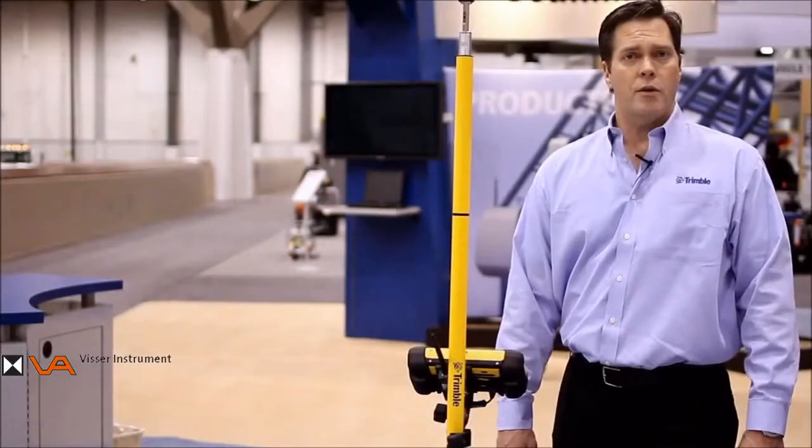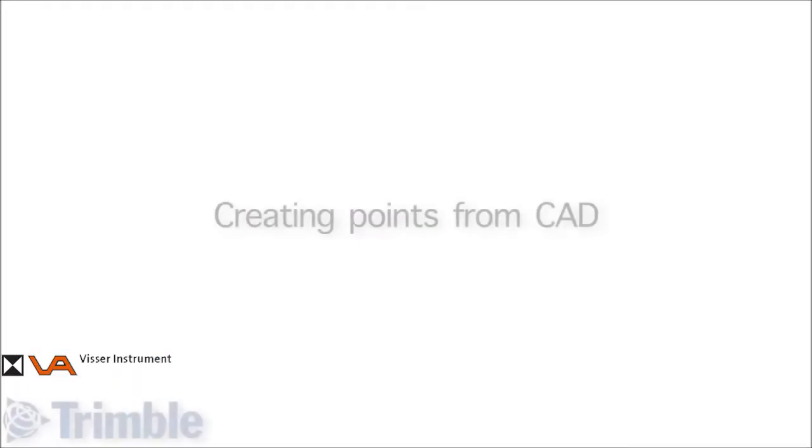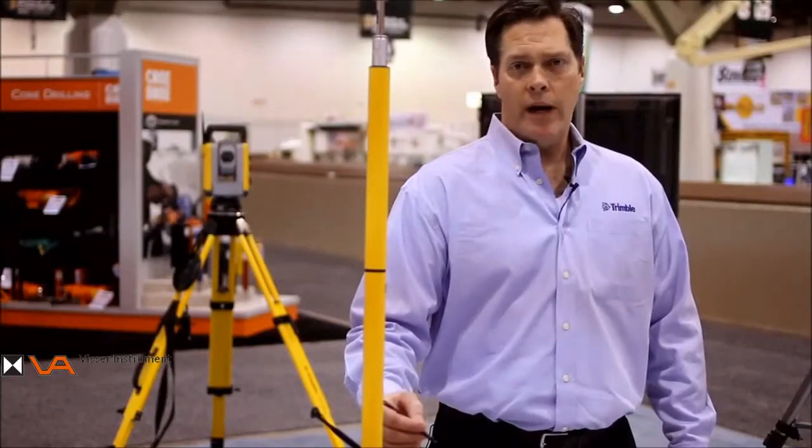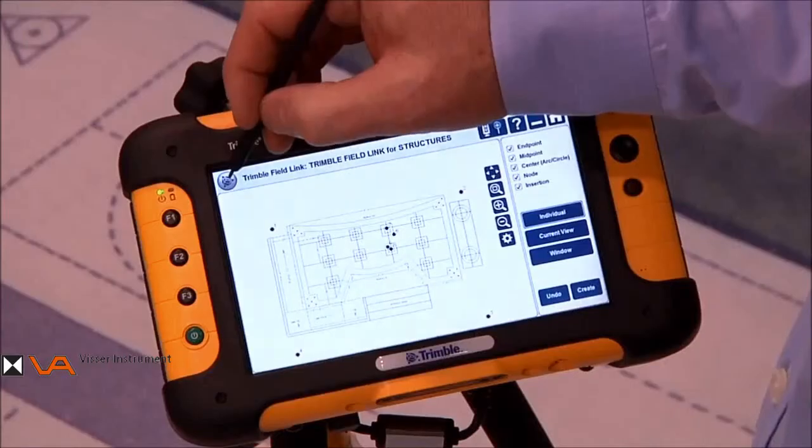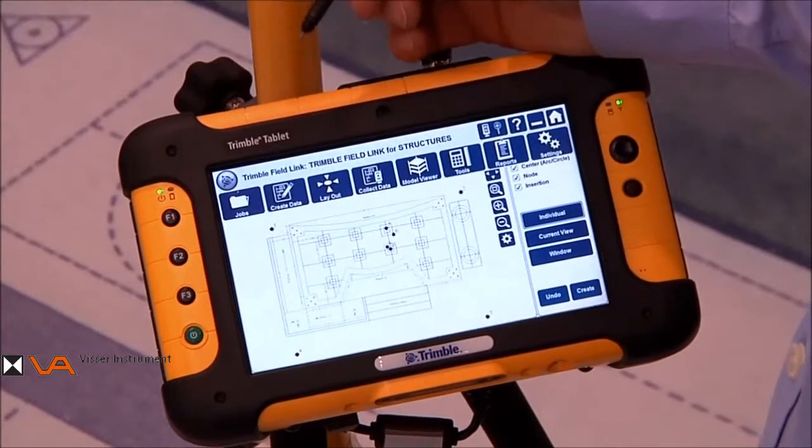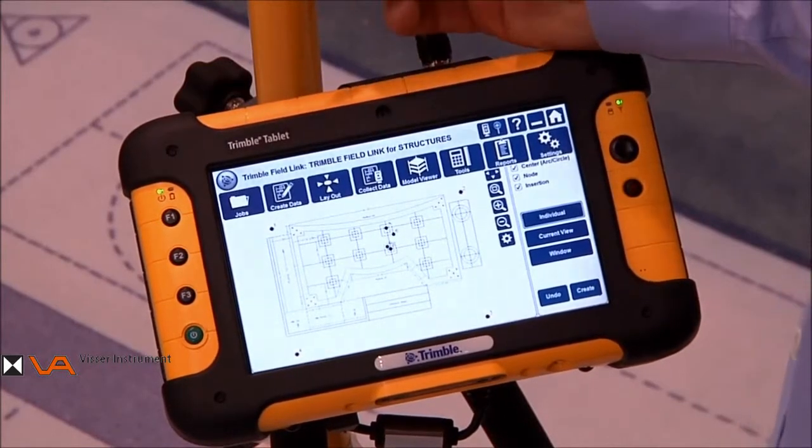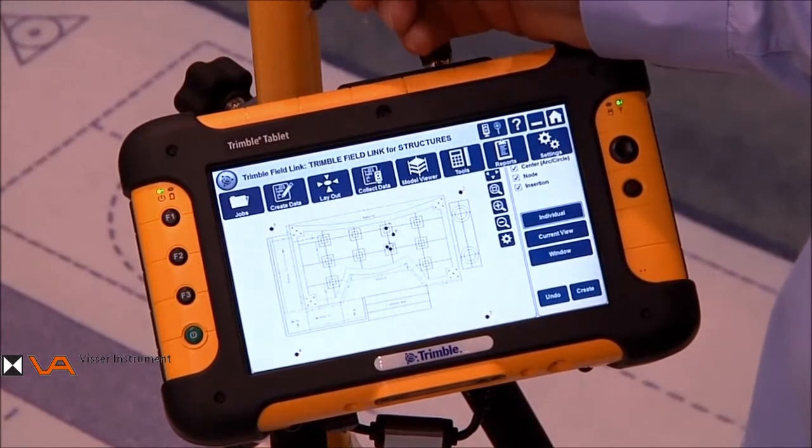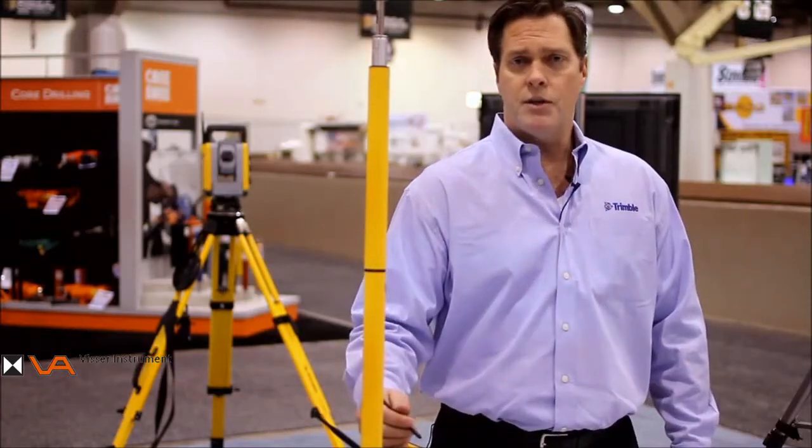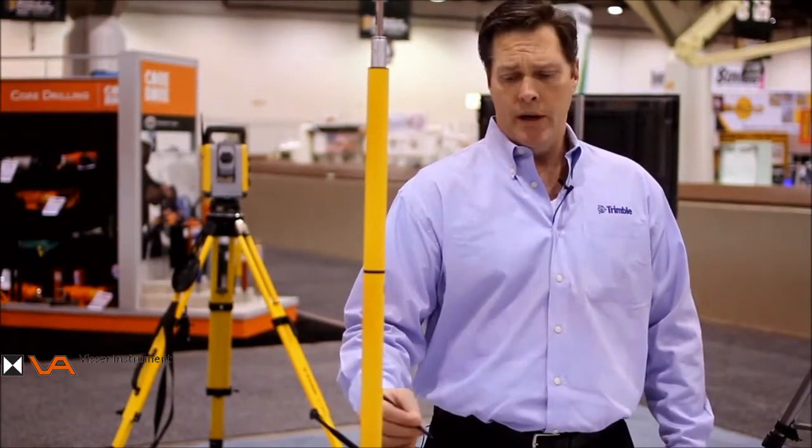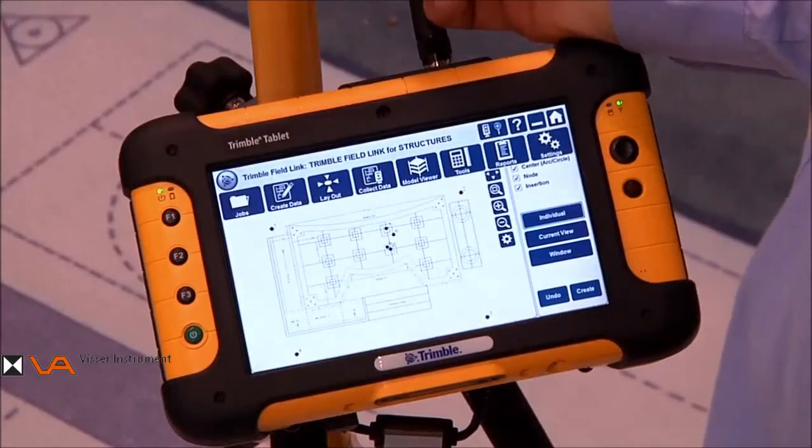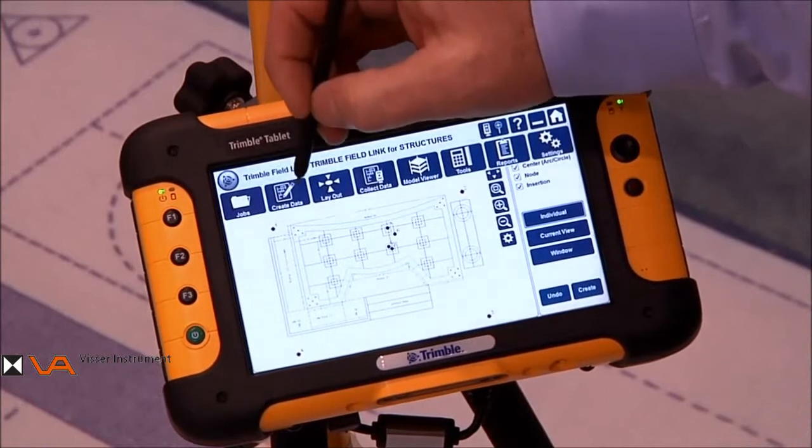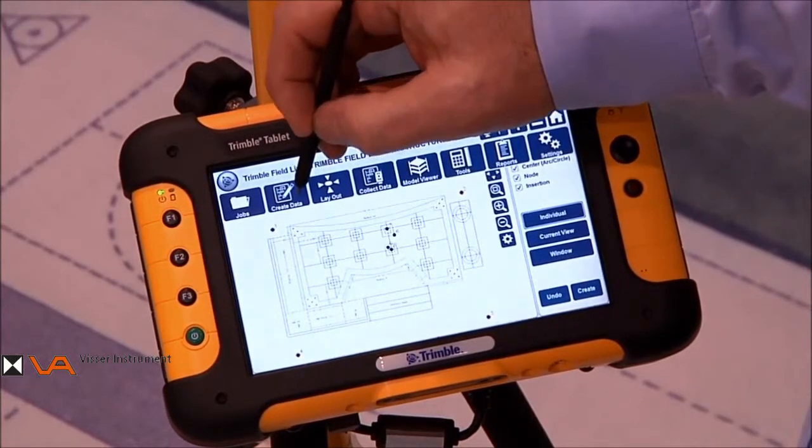So first, we'll start with create from CAD. The first step in creating points from CAD is to go to the Trimble globe in the upper left corner to access the ribbon. The ribbon can be accessed any time throughout the process of using the Trimble Field Link for Structures product.